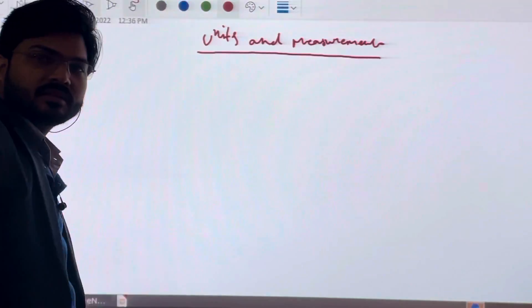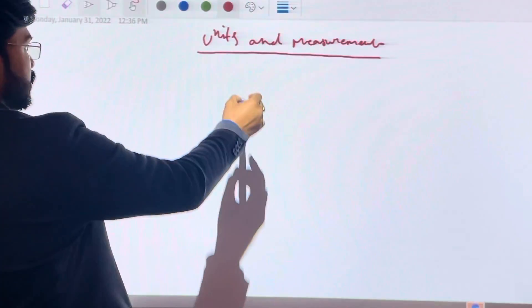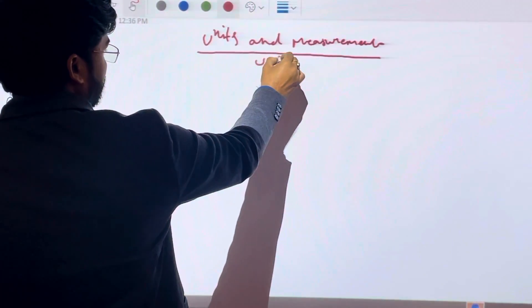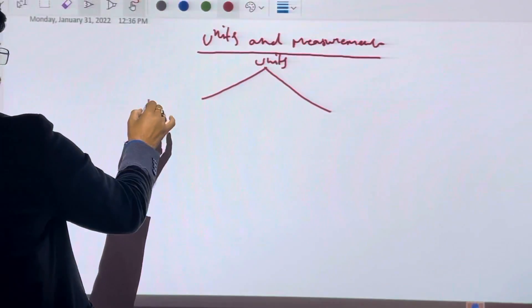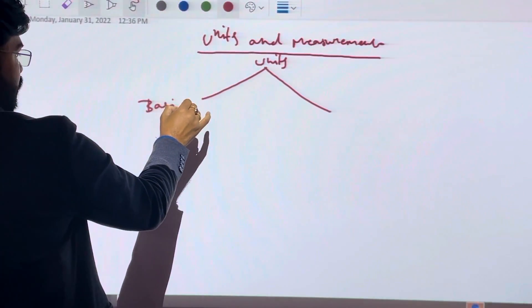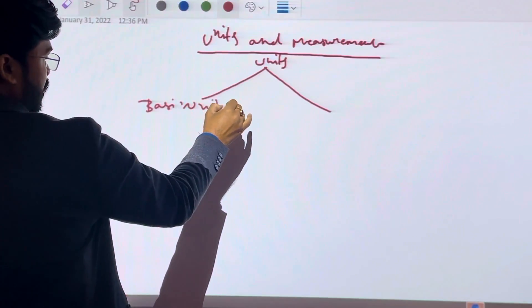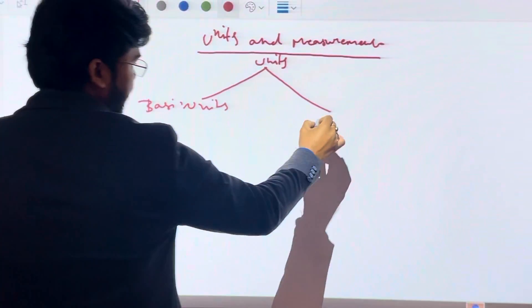We know that there are two types of units: basic units, also called fundamental units, and derived units.